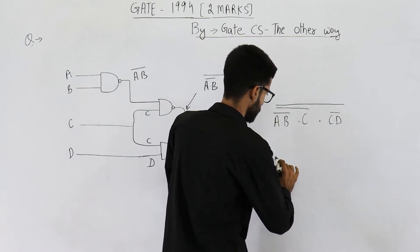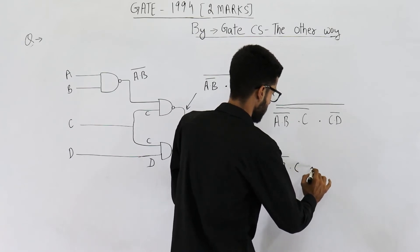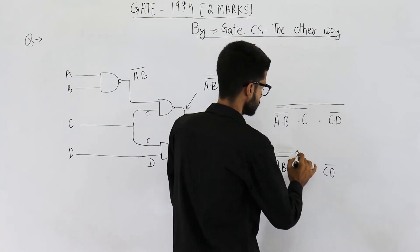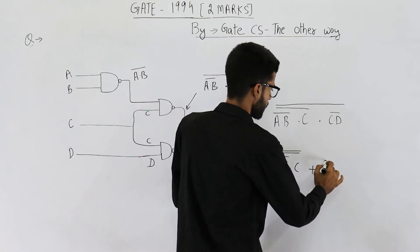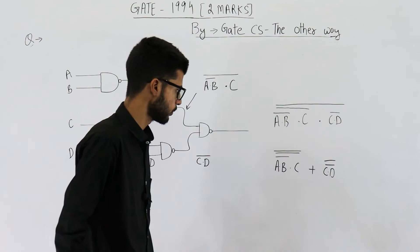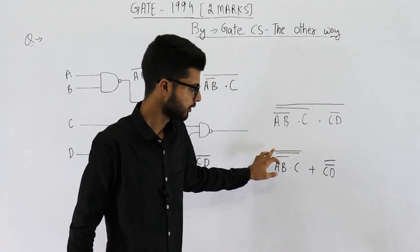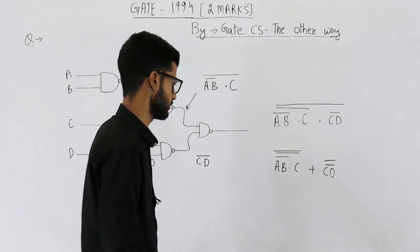a dot b complement dot c, plus c dot d complement, like this. Now you can notice these two complements will get cancelled. Similarly, these two complements will also get cancelled.